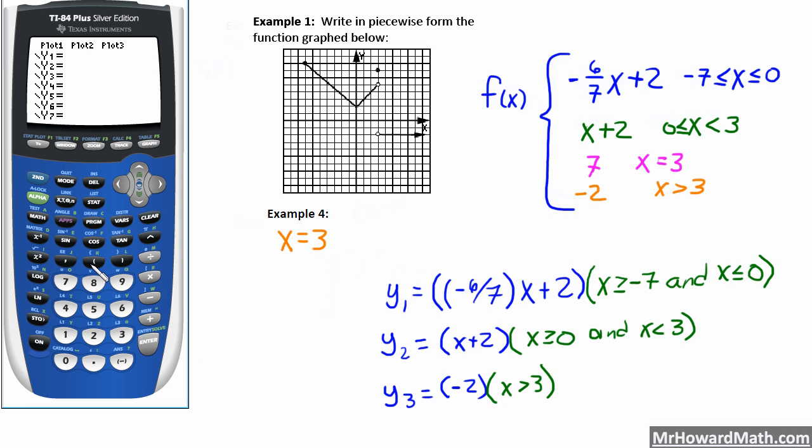So we're going to put two sets of parenthesis to start, negative 6 sevenths so that our slope, close parenthesis around our slope. So negative 6 sevenths x plus 2.